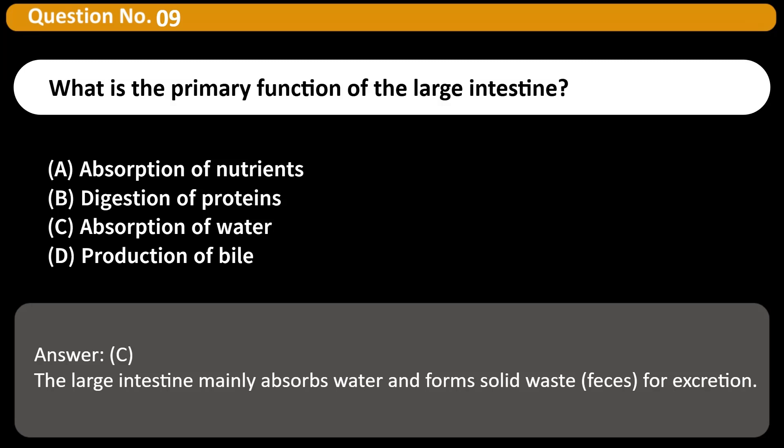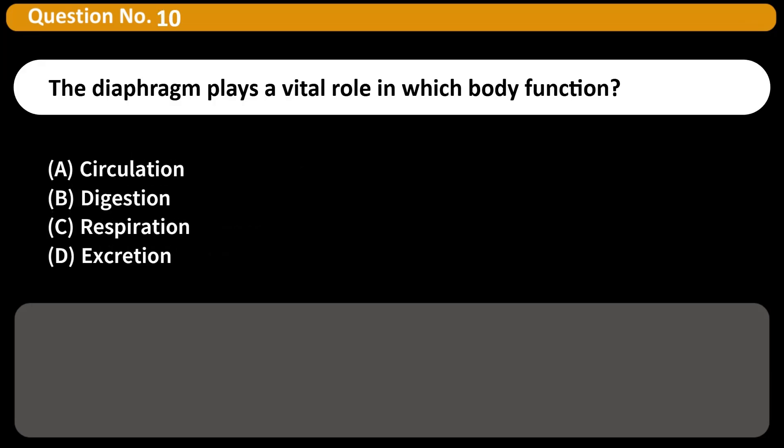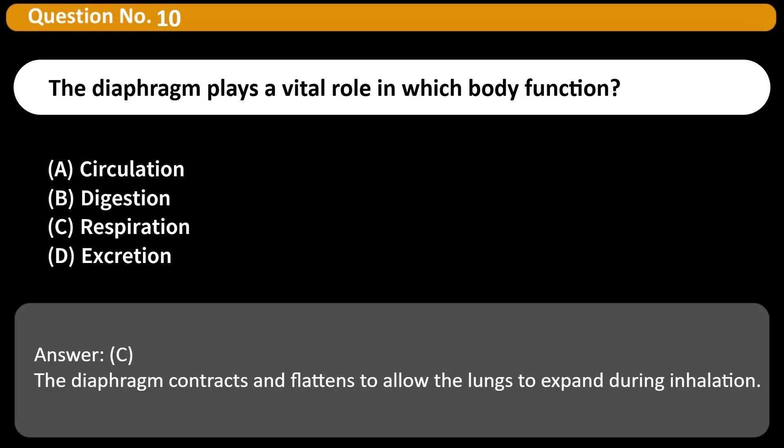The diaphragm plays a vital role in which body function? A) Circulation, B) Digestion, C) Respiration, D) Excretion. Answer: C. The diaphragm contracts and flattens to allow the lungs to expand during inhalation.